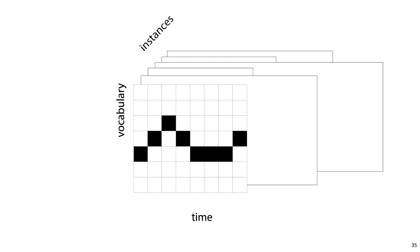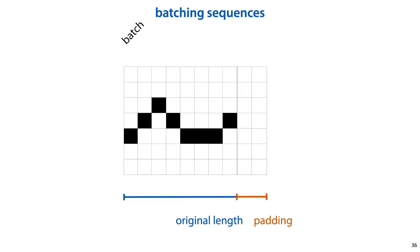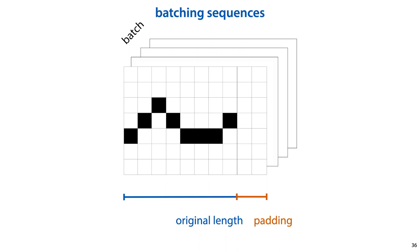However, when we batch our data to use it in mini-batched gradient descent, it's important for efficient computation that all instances in the batch have the same length. To achieve this, we can pad out the shorter sequences in the batch to match the length of the longest sequence. And this padding can be done with a special extra token, or simply with vectors containing only zeros.